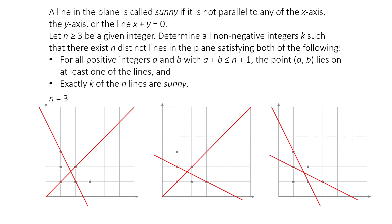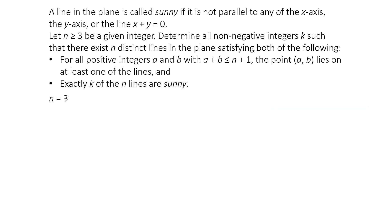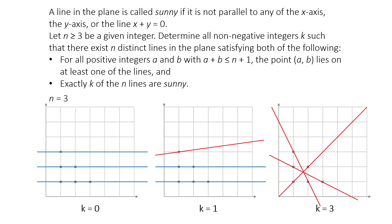To cover these last two points, we need a third line, but that line must also be sunny. Interestingly, we've already found that it's actually possible to have three sunny lines that cover all six points, but it is impossible to draw only two sunny lines. So for n equals 3, the number of sunny lines can only be 0, 1, or 3, but not 2.